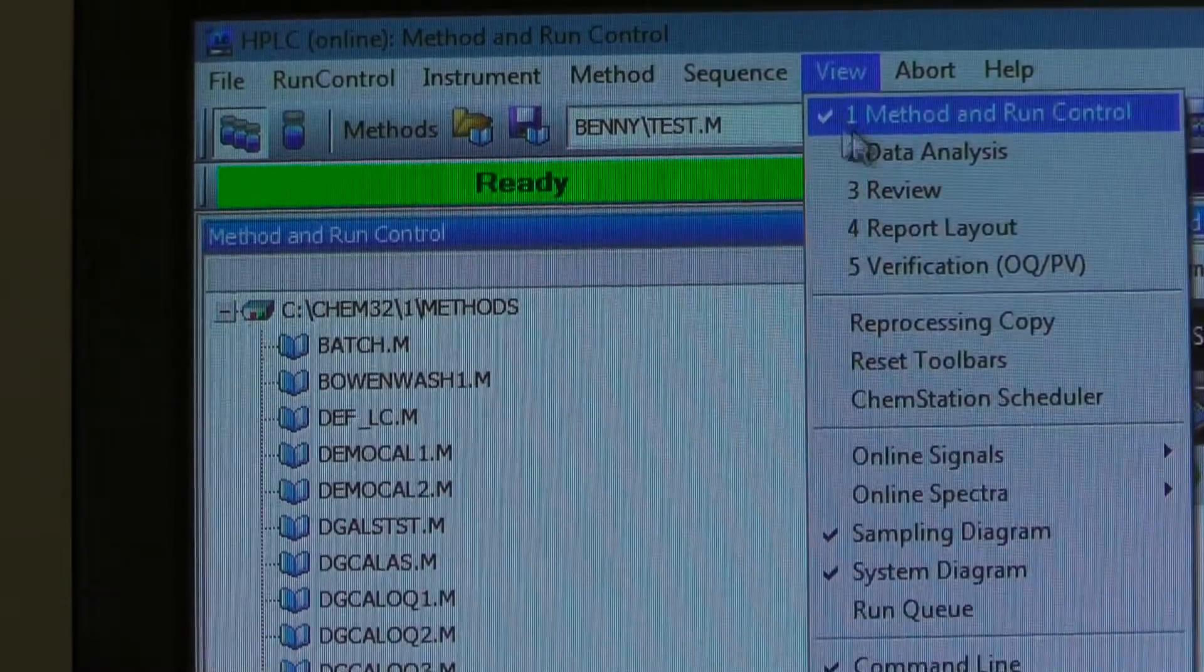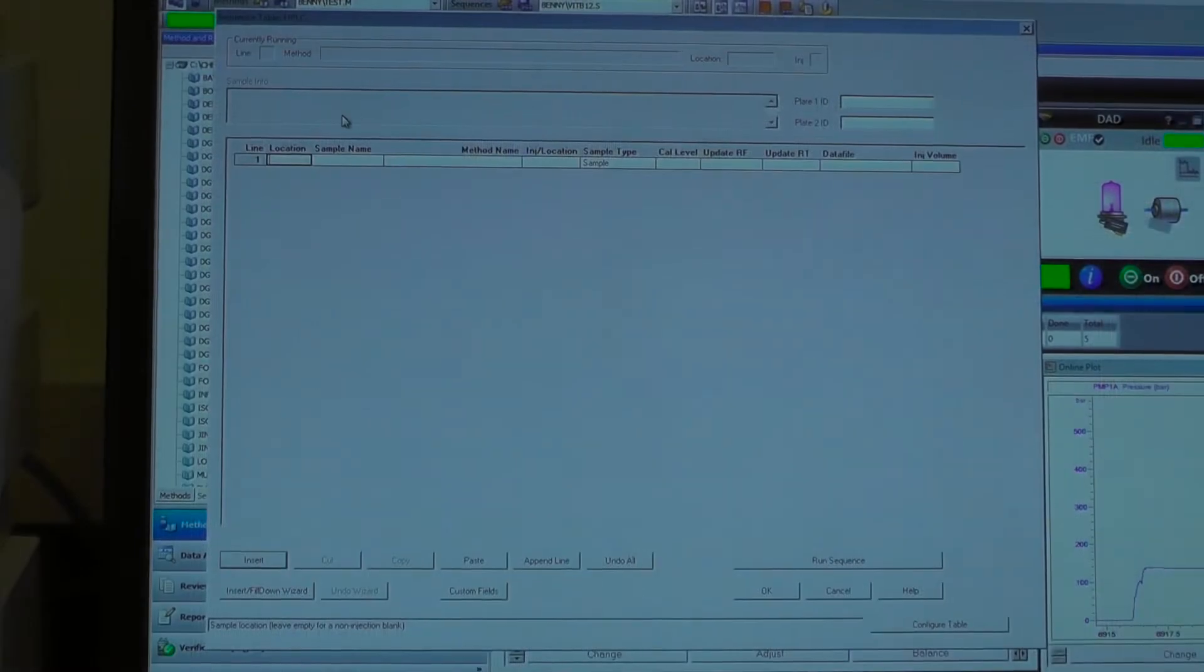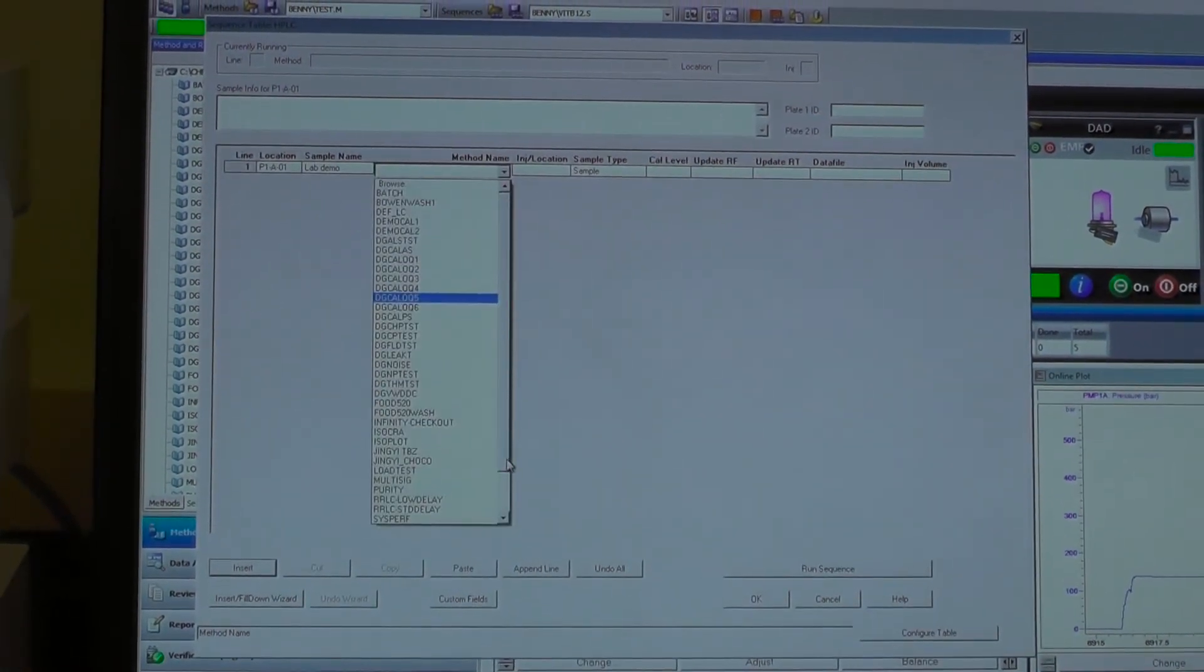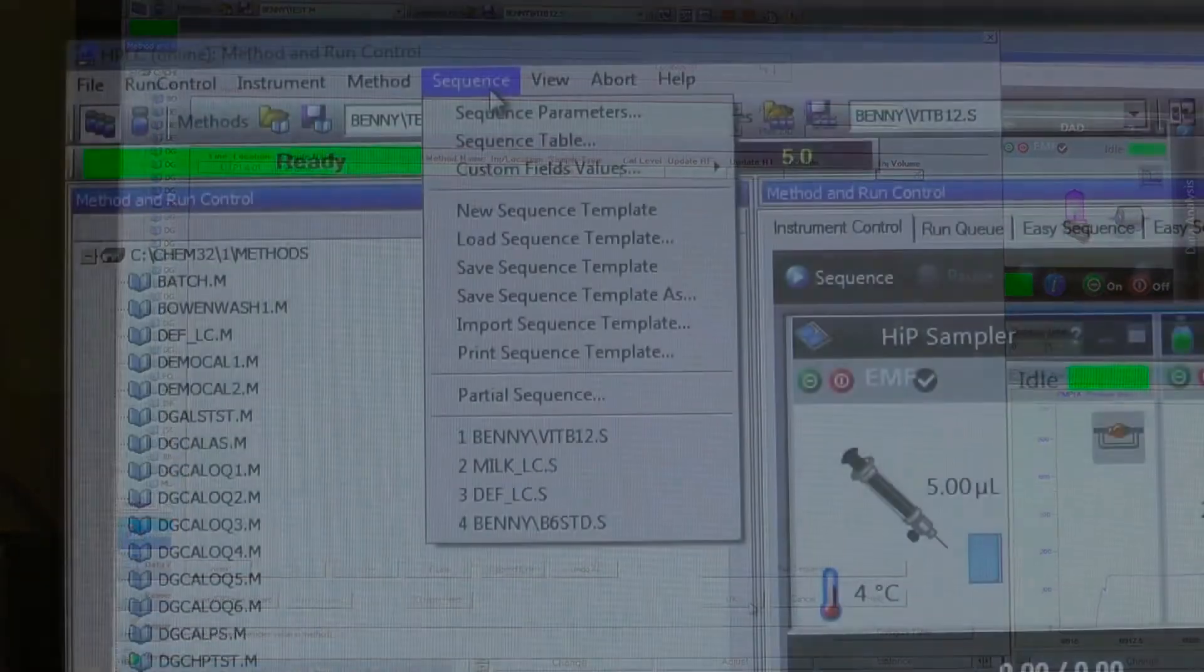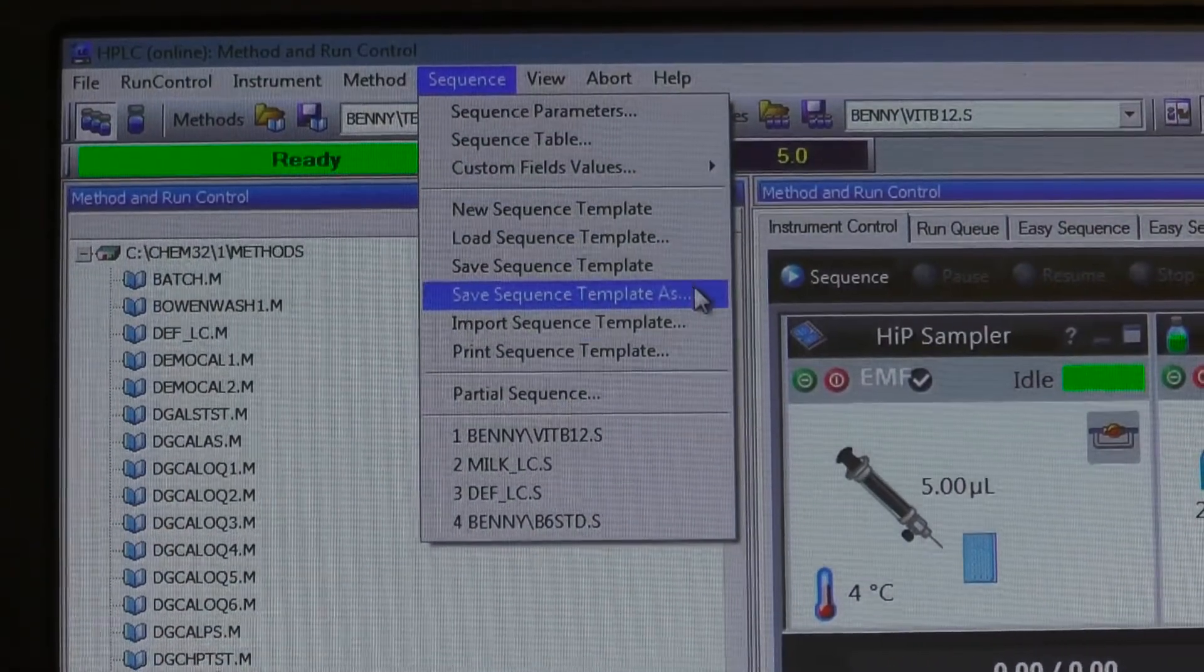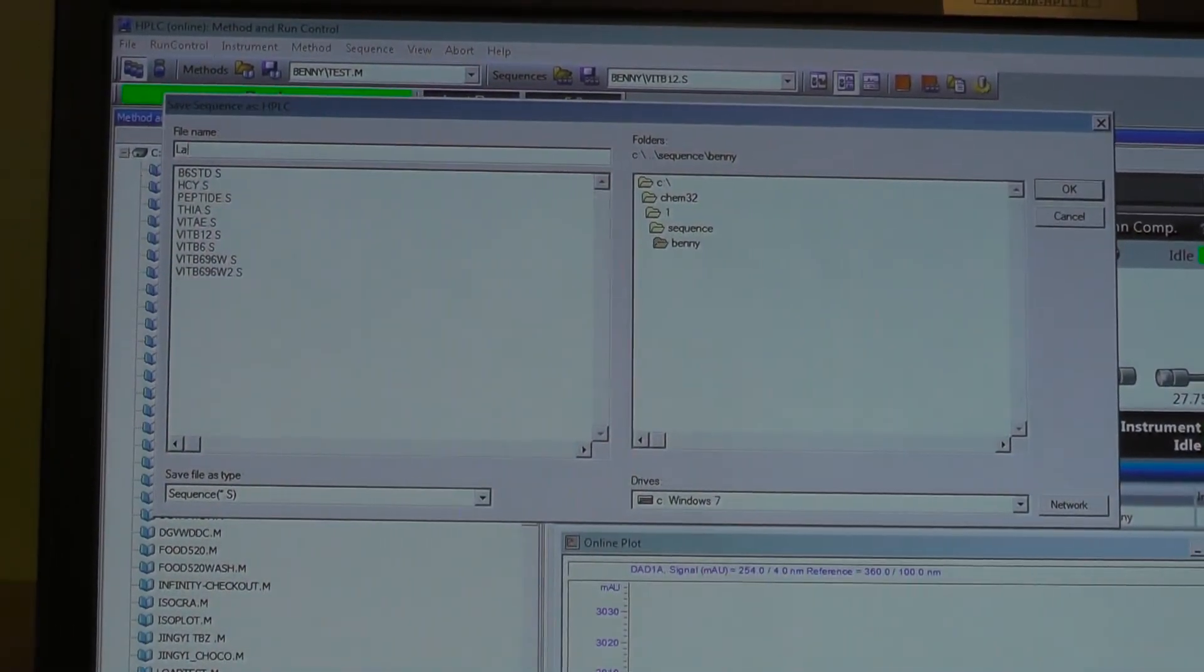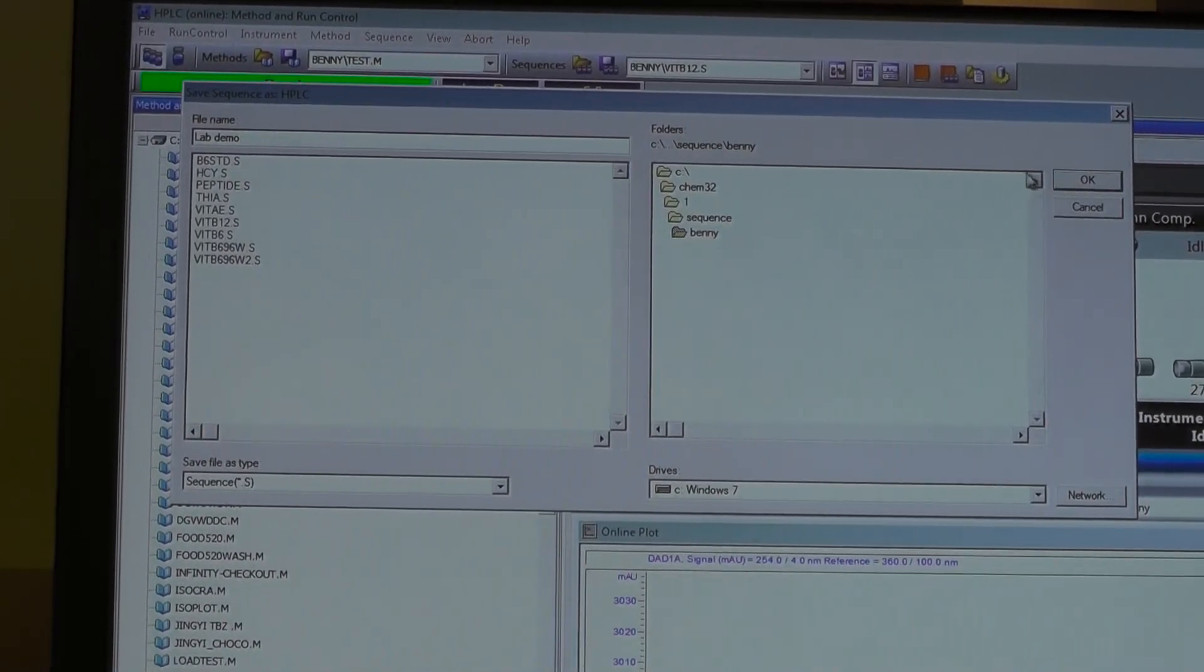Click on Sequence and then Sequence Table. Record the position of your samples here. Remember the plate closer to us is plate 1. Select Save Sequence Template As and store the Sequence Table in the designated folder, so that next time you can easily reload your sequence template in the future if needed.